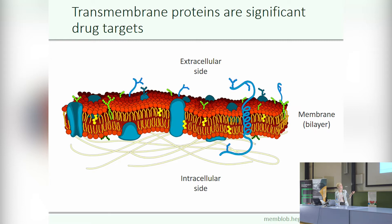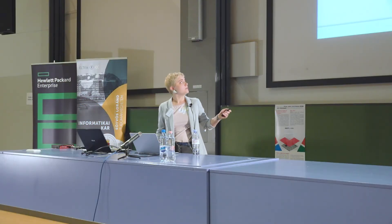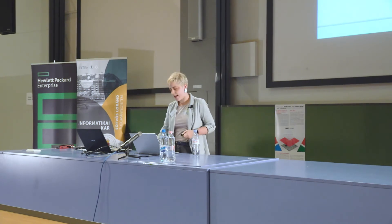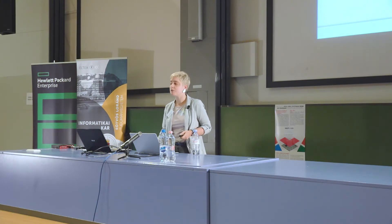For example, this is a peripheral protein and this is a surface protein. Transmembrane proteins play an important role in many cellular processes.